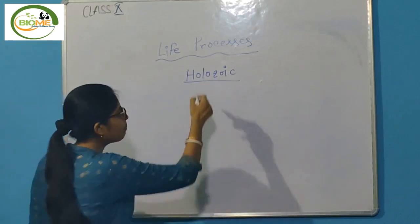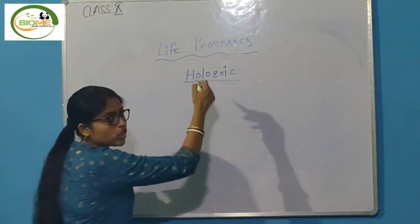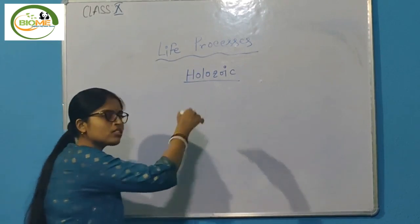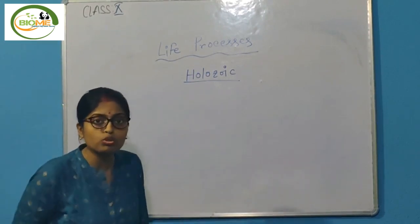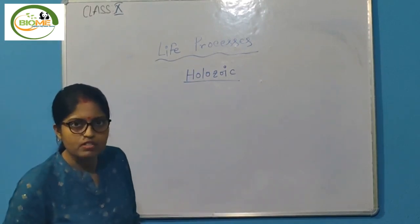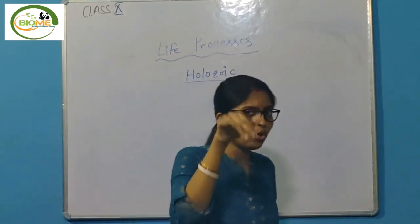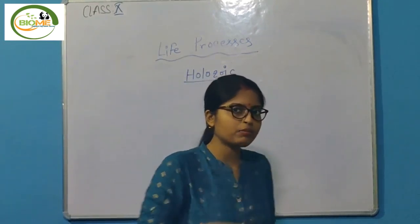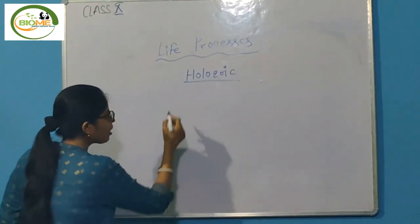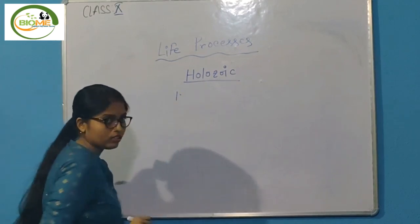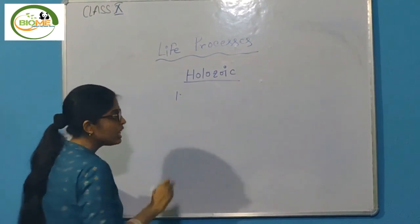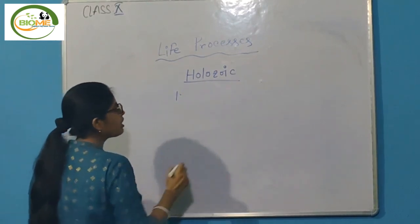To complete holozoic nutrition, the organism must go through five steps. Let's look at what those five steps are.